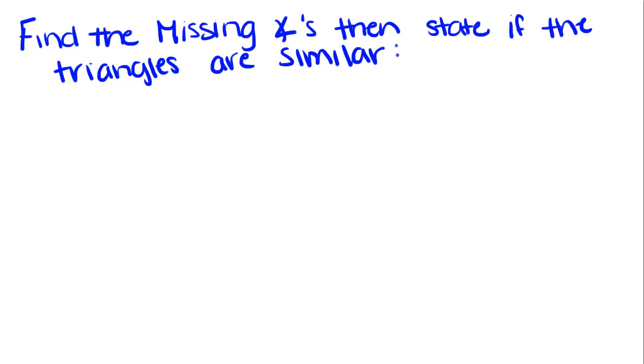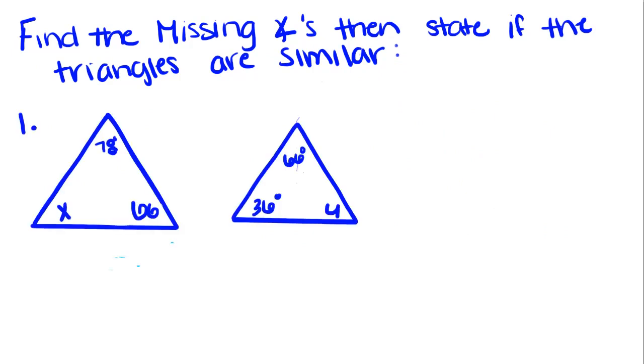So using AA, we're going to do some examples. The directions are, find the missing angles, then state if the triangles are similar. So first, in order to find X...